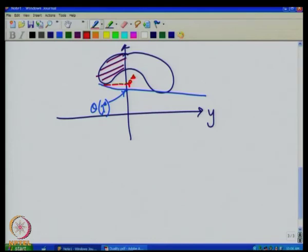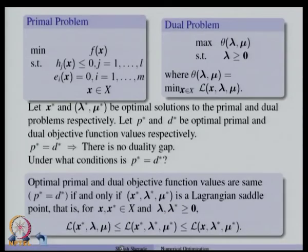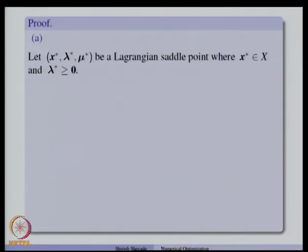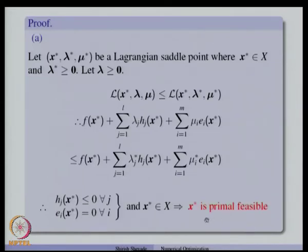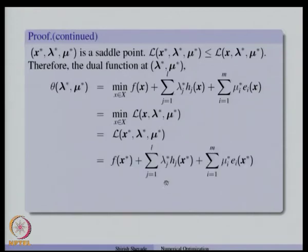We saw another example where in the y-z space if the set G has a non-convex shape, there will be a duality gap between theta(lambda*) and p*. So it is not always advisable to solve the dual problem, but in some cases the optimal dual value will equal the optimal primal value. The conditions under which the duality gap is 0: we saw the first part of the theorem which says the optimal primal and dual objective function values are the same if and only if x*, lambda*, mu* is a Lagrangian saddle point.